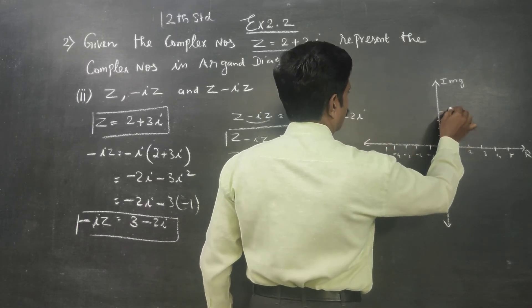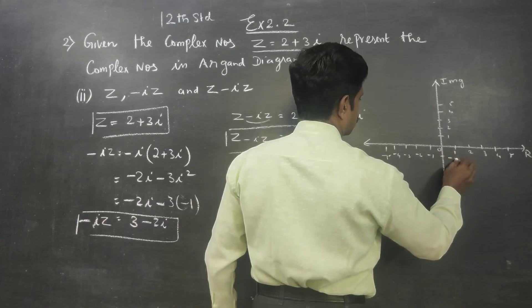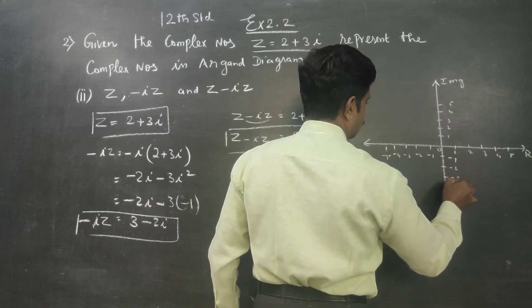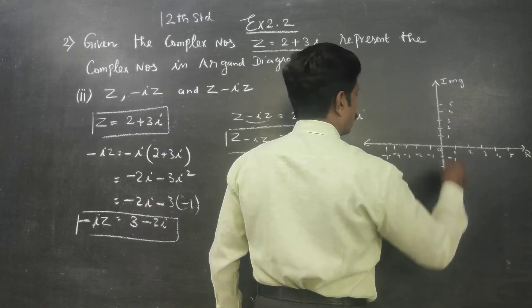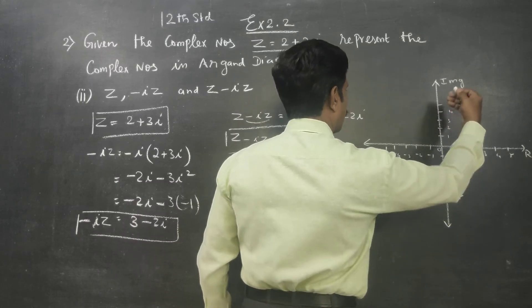On the imaginary axis: 1, 2, 3, 4, 5, minus 1, minus 2, minus 3, minus 4, minus 5. Okay, this is the value of i—actually 1i, 2i, 3i.